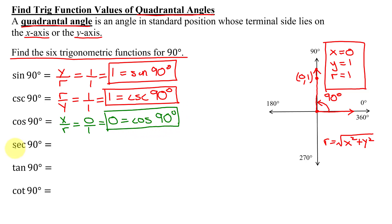And its reciprocal, the secant function, the secant of 90 degrees is going to be r over x, which is 1 divided by 0, which is undefined. So the secant of 90 degrees is undefined.